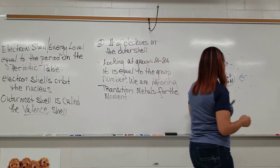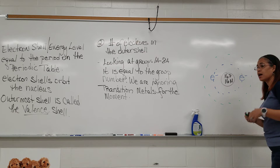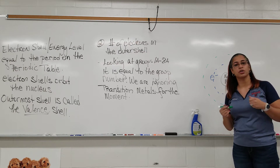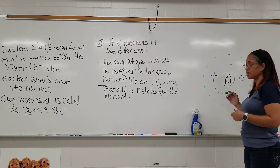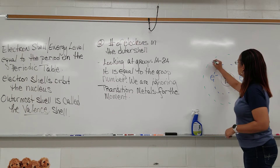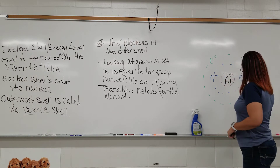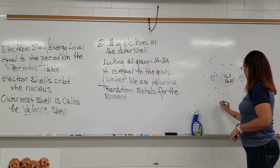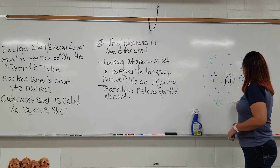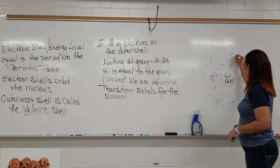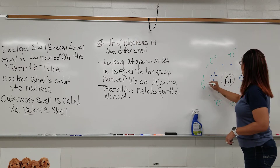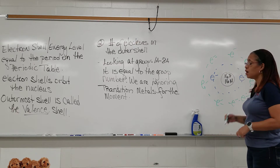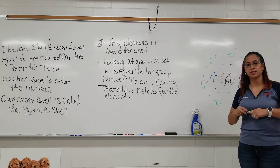In the second shell, the maximum number of electrons is eight, and sulfur's second shell is full. So we place eight electrons in the second shell: one, two, three, four, five, six, seven, eight — eight electrons in the second shell.